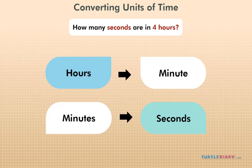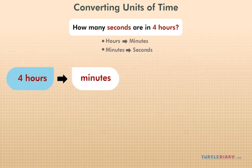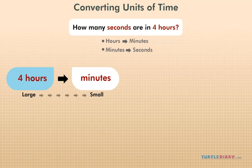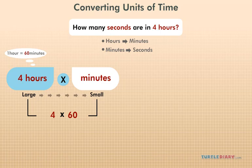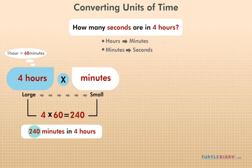To convert 4 hours to minutes, we must first realize we're going from large to small, so we'll need to multiply. There are 60 minutes in an hour, so we'll multiply by 60. 4 times 60 equals 240. There are 240 minutes in 4 hours.